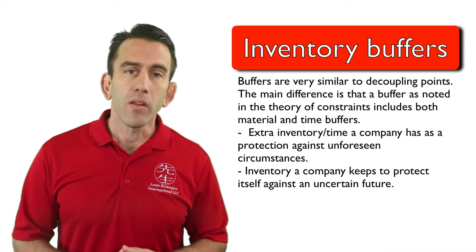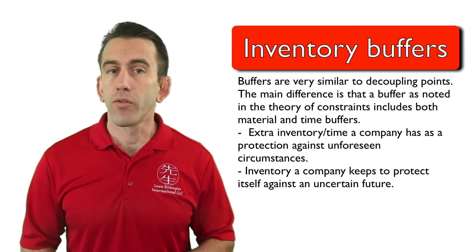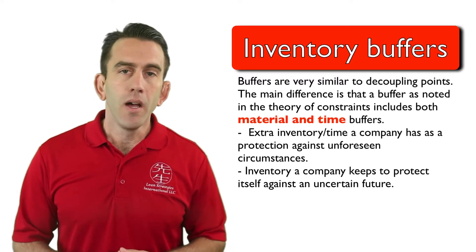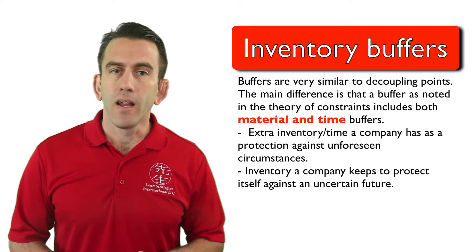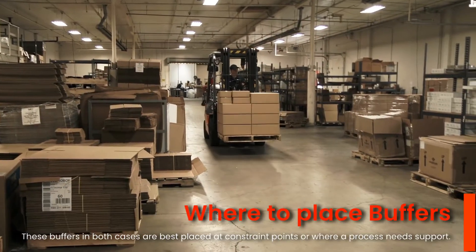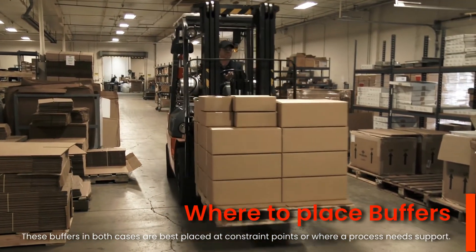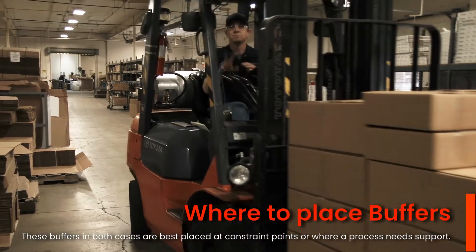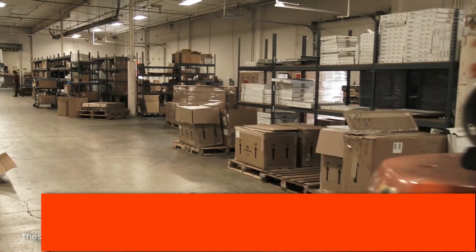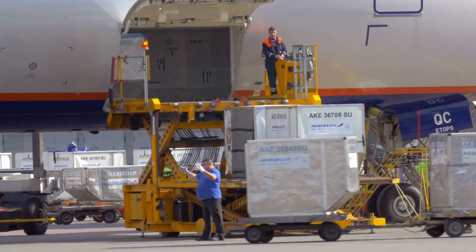In simple words, it is the excess inventory that a company keeps and reserves to protect itself against an uncertain future. Buffers can be maintained as material buffers or time buffers. These buffers in both cases are best placed at constraint points or any point in a process where the operation may need a little extra support. These could be shipping points, convergent points, or divergent points. Simply put, buffers are placed where a process needs help.